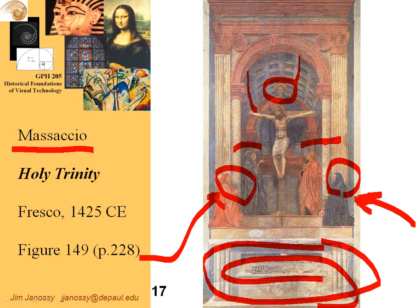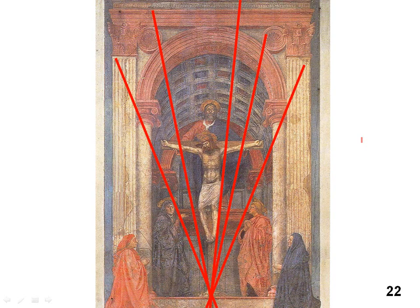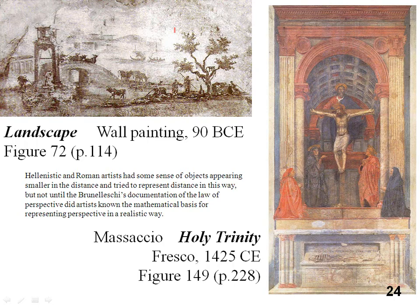The big thing about this fresco is the way Masaccio used perspective. He drew lines first as a guide to how to draw this vaulted ceiling and make these elements recede in the distance the way they would if this really existed. Some people think he might have even made a model of this and worked from that. If you do the same thing I did on the Uffizi photograph and extend the lines here, you can determine what vanishing point he chose — and it might actually have been a little bit lower, in that crypt area under the picture.